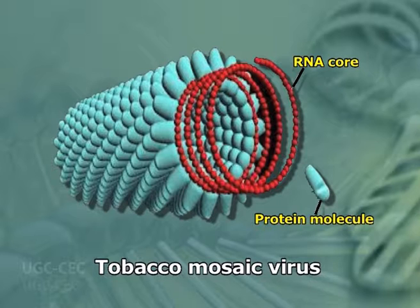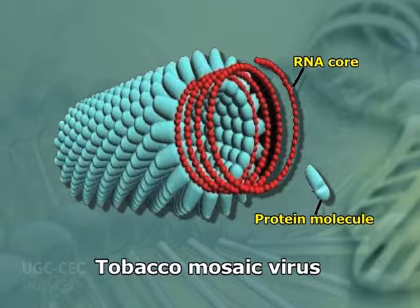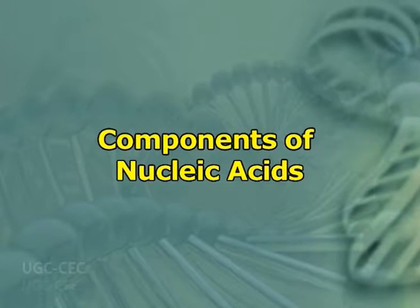In some viruses, RNA meaning ribonucleic acid is the genetic material. For example, tobacco mosaic virus, which infects tobacco plants, consists only of RNA and protein, not DNA.